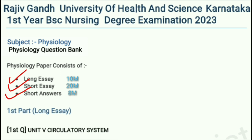Our physiology paper consists of 3 parts: the first part is long essay which carries 10 marks, the second part is short essay which carries 20 marks, and the third part is short answers which carries 8 marks.